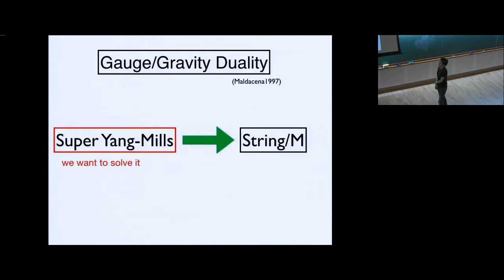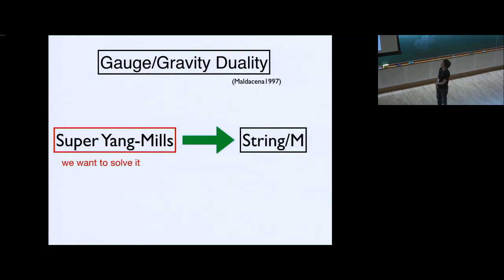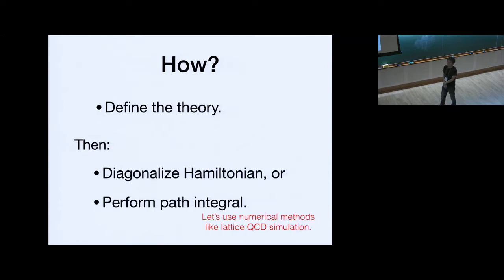The motivation is very simple. We want to use gauge-gravity duality to learn about string theory and M theory. For that purpose, we should solve the super-Yang-Mills theory, which can be regarded as a non-perturbative formulation of string and M theory. The problem is how we can solve it. In principle, we should just define the theory and then diagonalize the Hamiltonian or perform the path integral.